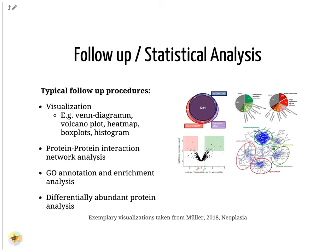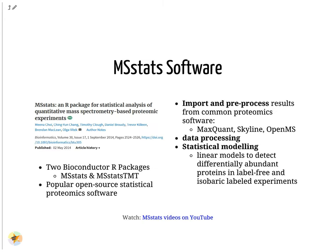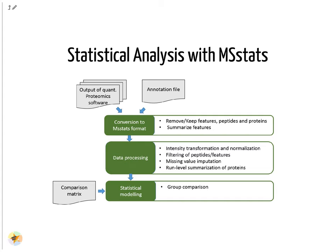Finding differentially abundant proteins between different groups requires statistical analyses. MSstats is an open-source software for statistical modeling of quantitative proteomics data. It is compatible with complex designs of label-free and isobaric labeled quantification experiments. First, several processing steps are performed. Then MSstats applies flexible linear models to detect differentially abundant proteins. MSstats takes identified and quantified spectral peaks from common proteomics software such as MaxQuant as input. For DDA data, MSstats starts with peptide-level data and applies several feature selection and processing steps to account for proteomics-specific data properties. Afterwards, MSstats calculates new protein abundances and performs statistical modeling on them.